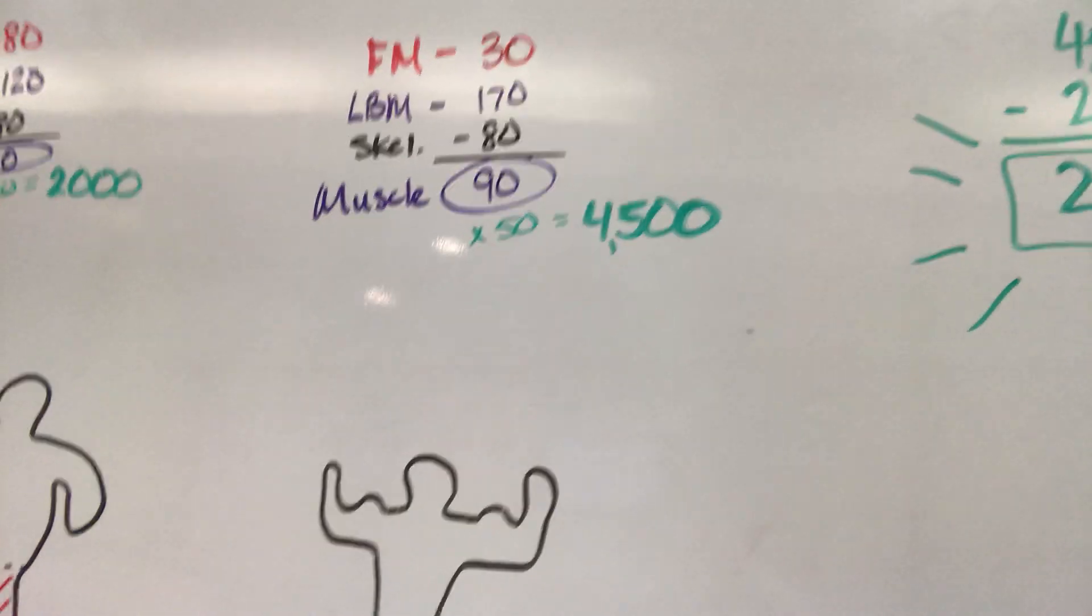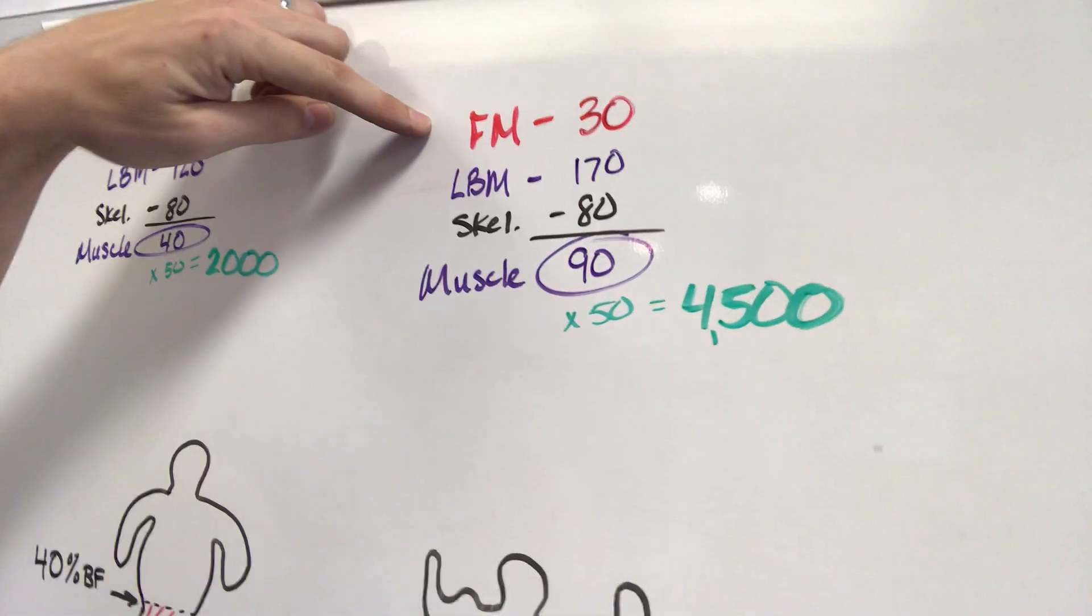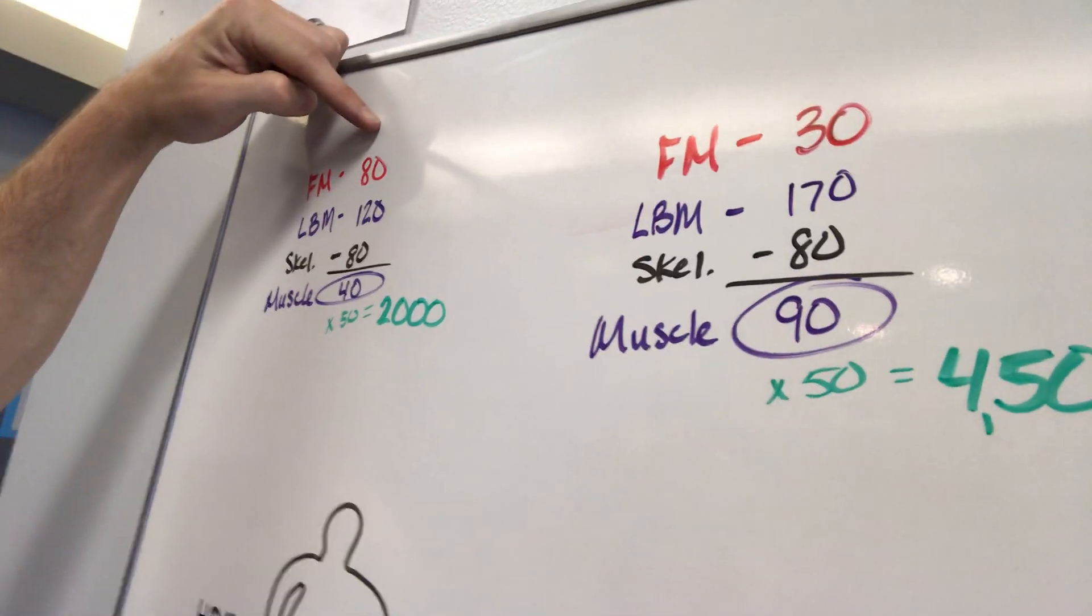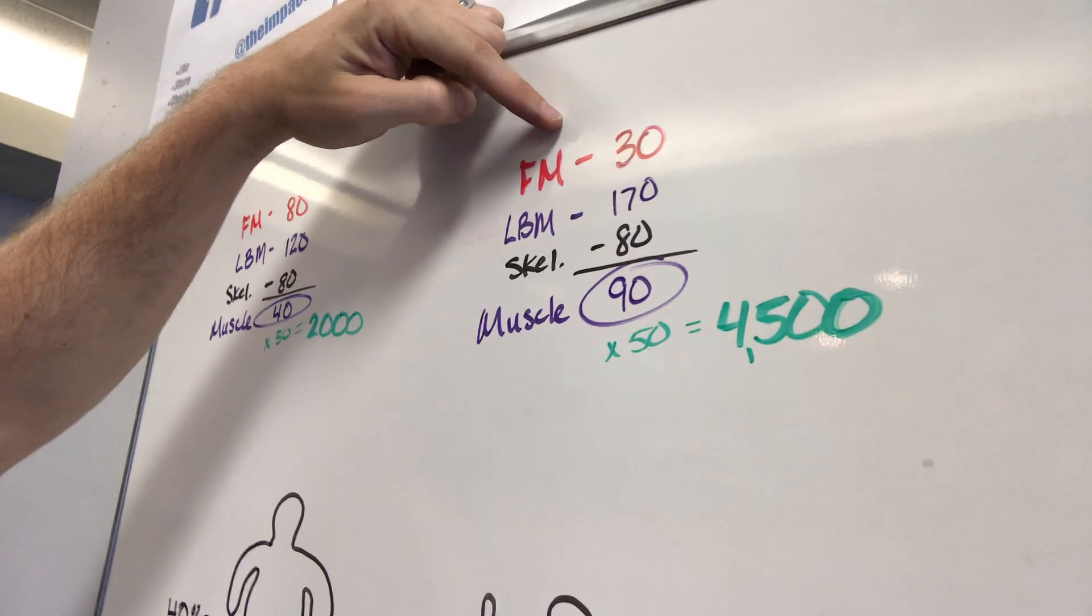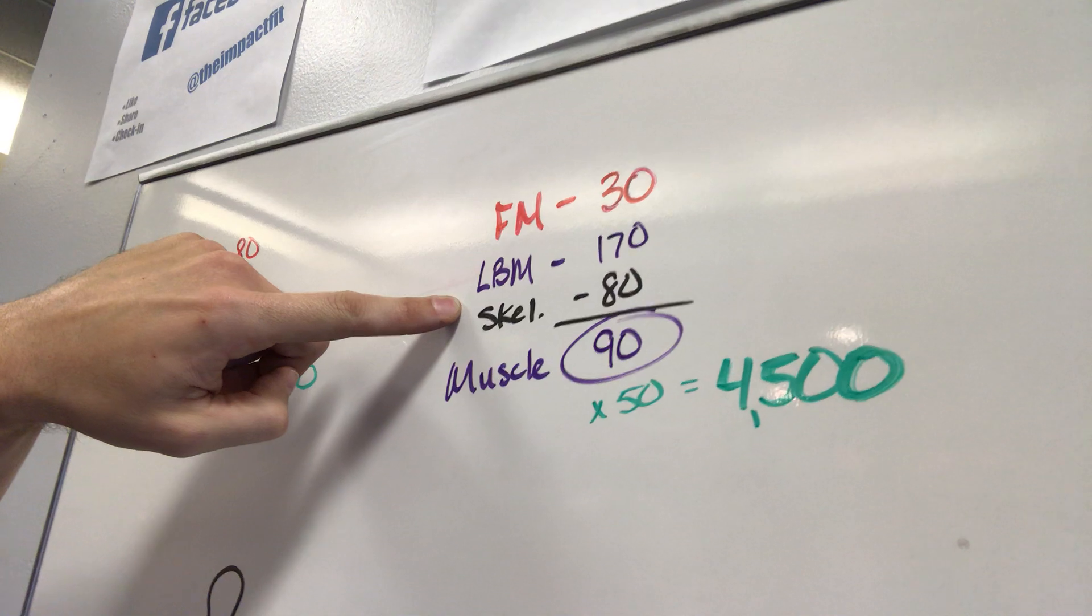Person B, 15% body fat, they weigh the same, but their fat mass is only 30 pounds. That means they're 50 pounds less body fat, even though they weigh the same. 50 pounds less body fat. Alright, so 30 pounds of fat mass, that means what's left over, lean body mass, is 170.